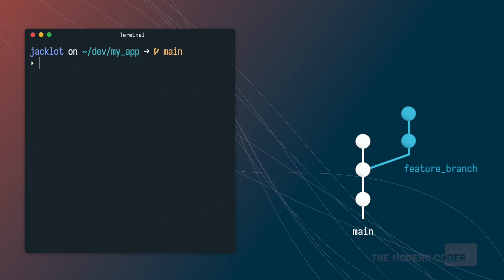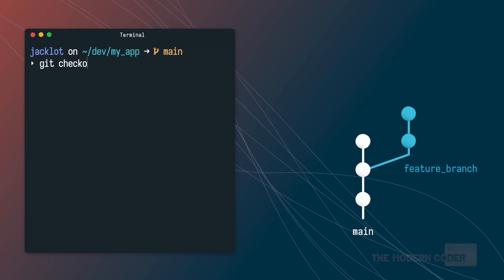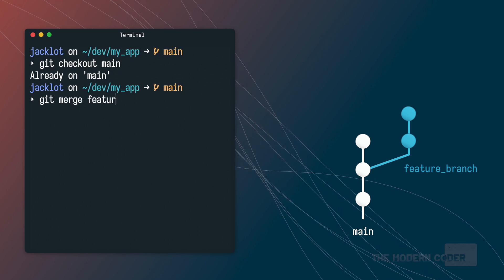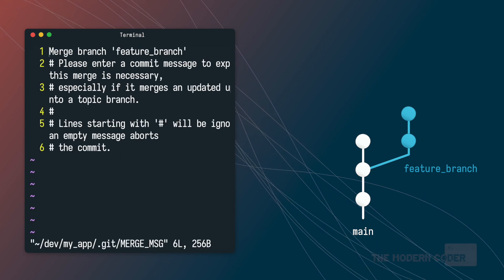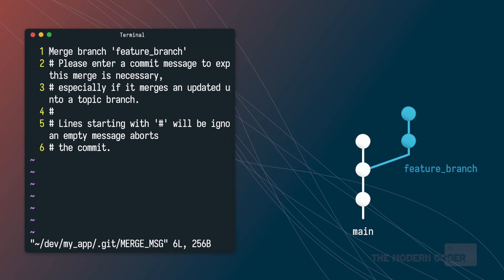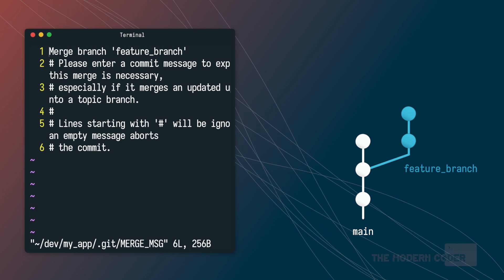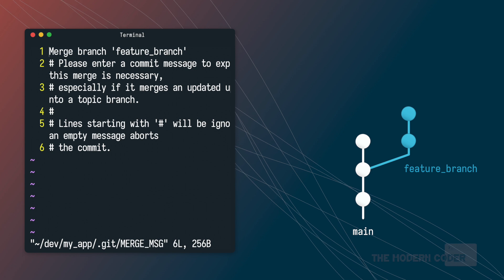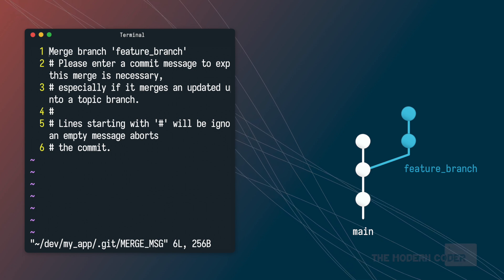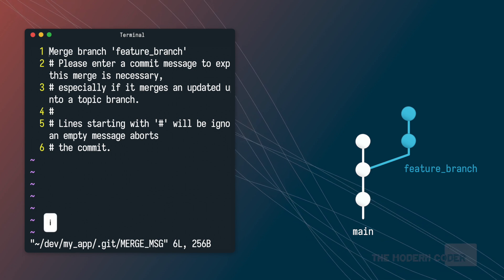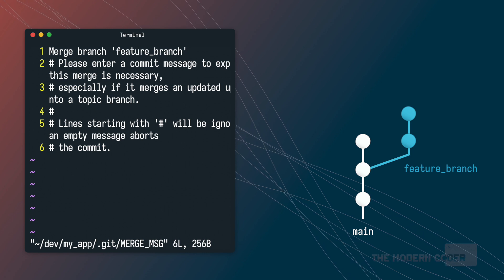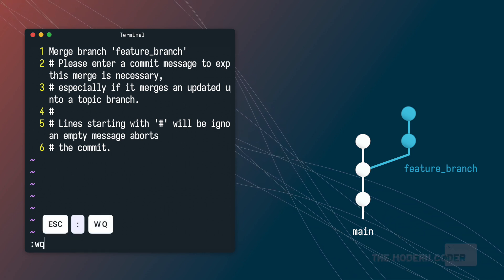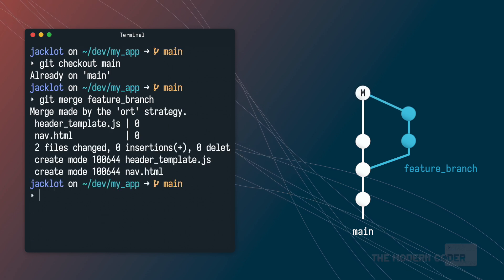To do this, I'll just hop over into my terminal, make sure I have my main branch selected. Then I'll run git merge feature branch to tell git that I'd like to bring that branch over onto my currently selected branch, which is main. Git will pop open my default terminal text editor — by default it's going to be vim — and allow me to add a descriptive message to that merge commit. I can either press i to enter insert mode and type my message, but I'll just leave it as it is for now. Then I'm going to press escape colon wq, hit enter, and that'll save that merge message.